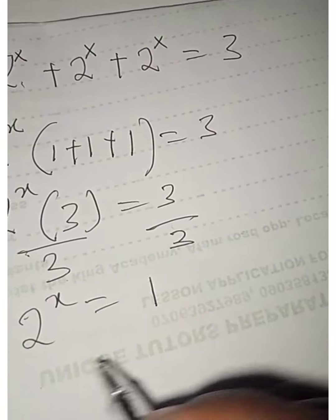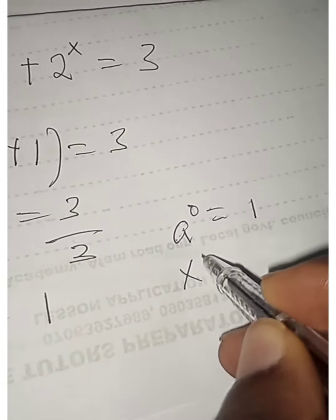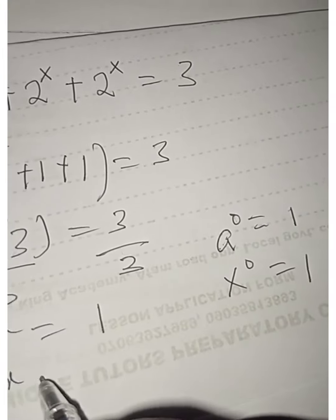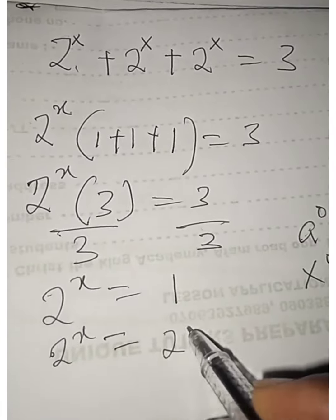But we can write, remember that any number raised to power 0 is equal to 1. x raised to power 0 equals to 1. So we can write 2 raised to power x equals to 2 raised to power 0.